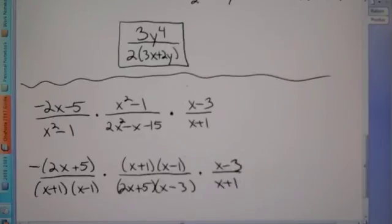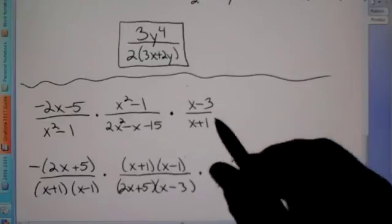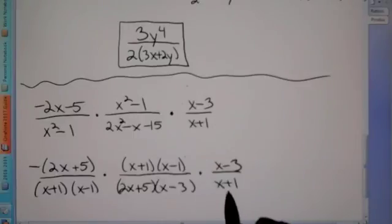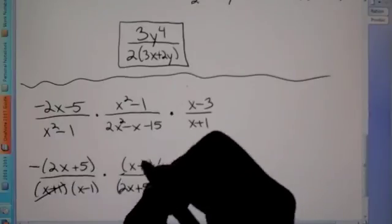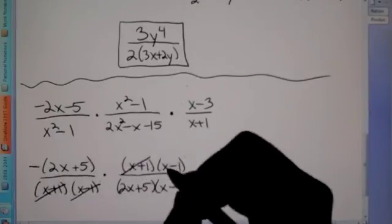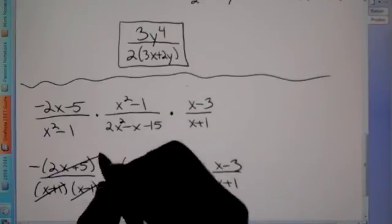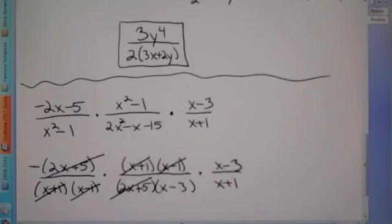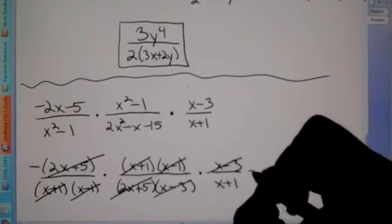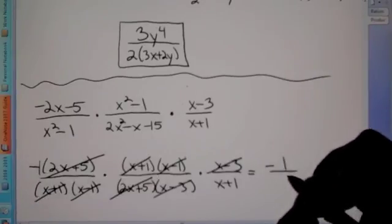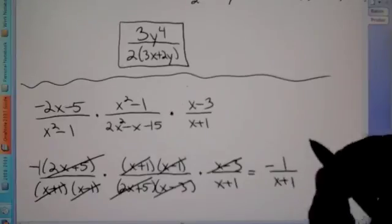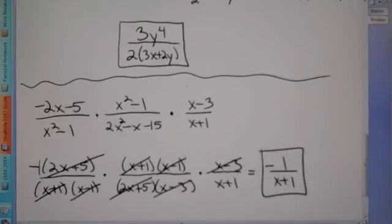Now we're done factoring and we can cancel. Notice we have two X plus 1's on the bottom but only one on top — you can only cancel one for one. So we cancel X plus 1 top and bottom. We cancel X minus 1 top and bottom. We cancel 2X plus 5 top and bottom. We cancel X minus 3 top and bottom. Really, all we're left with on top is the negative and an invisible 1 — so we're left with negative 1 on top and X plus 1 on the bottom, because everything else got canceled out. This is our final answer.